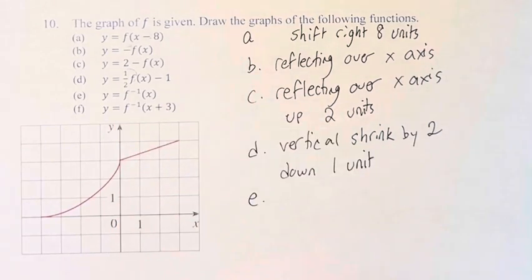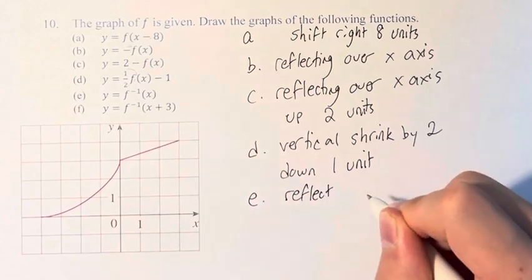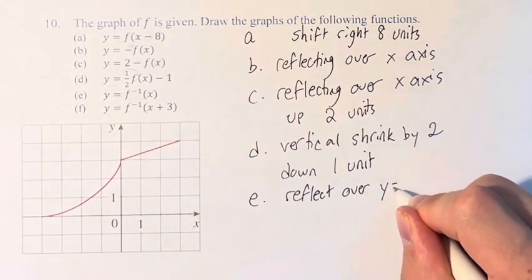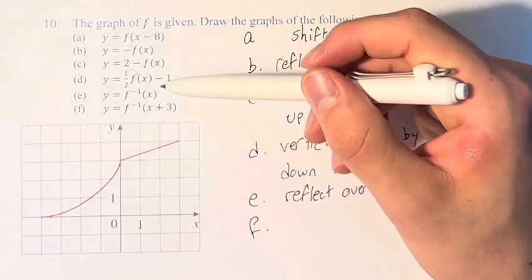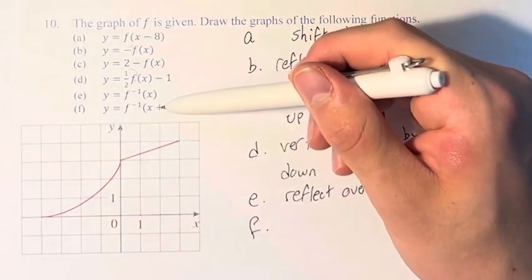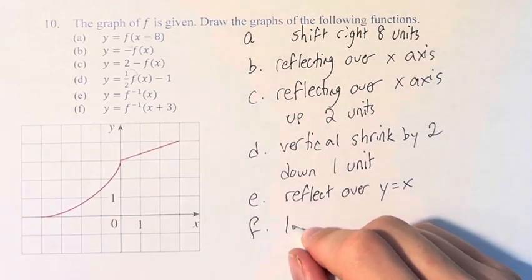In part e, we're taking the inverse of the function, so we reflect over the line y equals x. In part f, we take the inverse of the function where we have also shifted to the left 3 units.